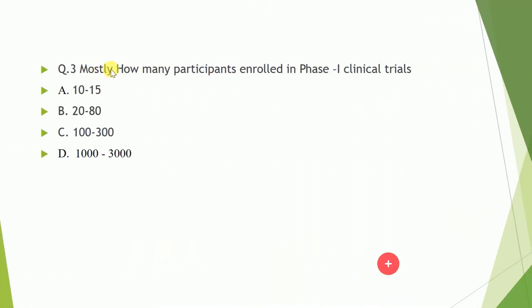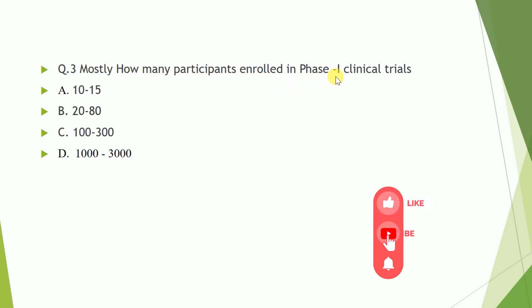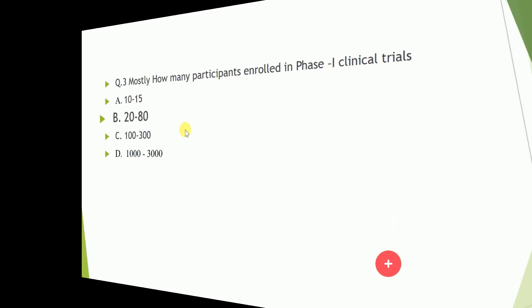Question number three: mostly how many participants enroll in phase one clinical trial? The correct answer is 20 to 80.